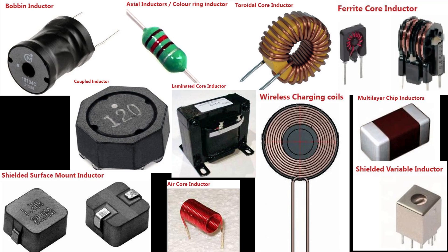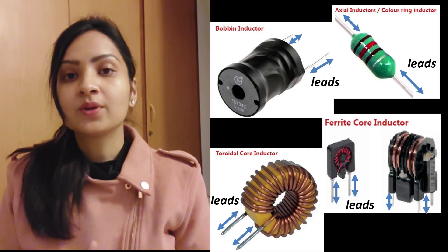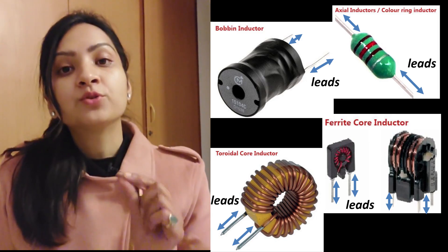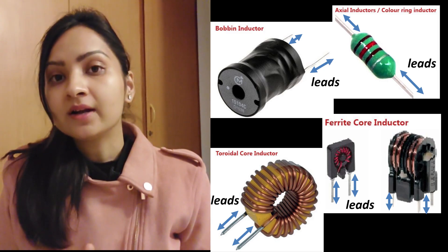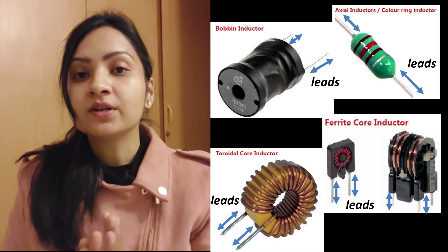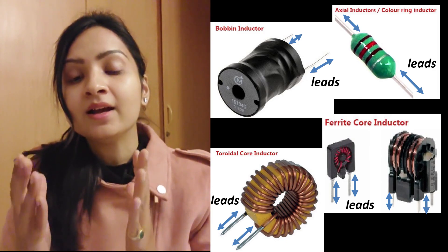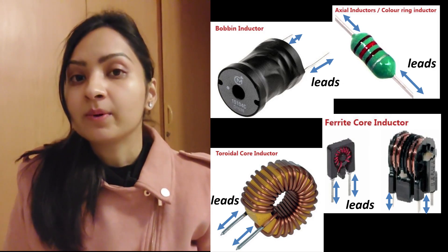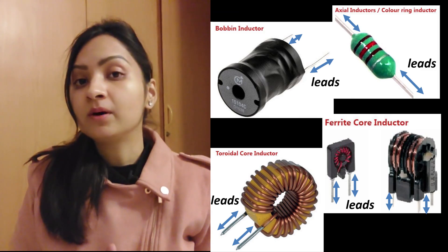Whenever you purchase a fresh inductor from a manufacturer, the leads of the inductor are usually very long — they can be several inches. Now these leads are a kind of conductor, and when you make connections, if these leads are long enough and there is a potential difference between this lead and an adjacent conductor nearby, it will act like a stray capacitance. It is to be noted that even a small inch of wire can have a considerable amount of capacitance.